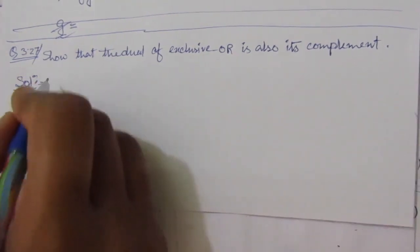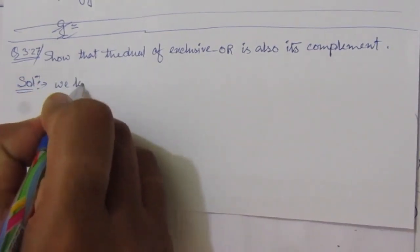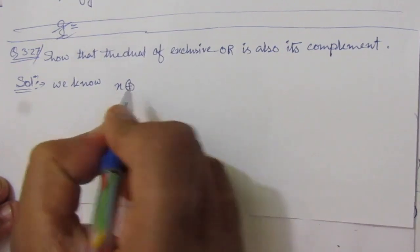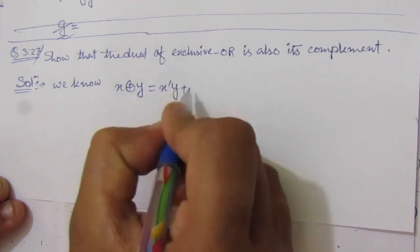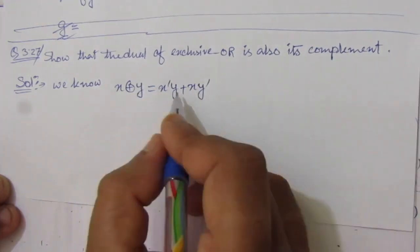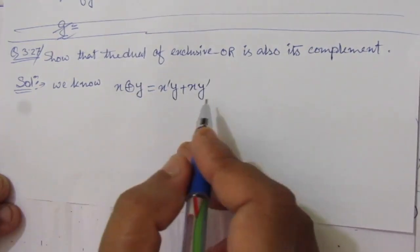So we know that first of all, x XOR y equals x bar y plus xy bar. This is the XOR expansion.